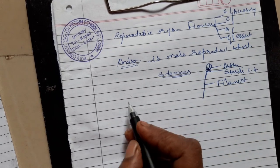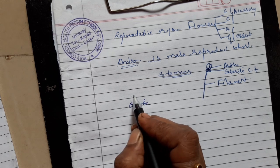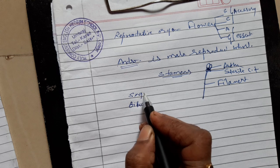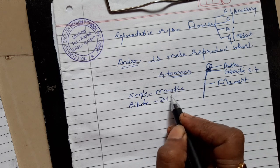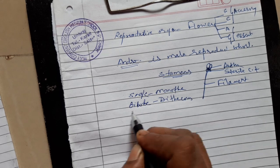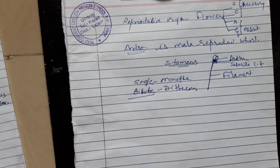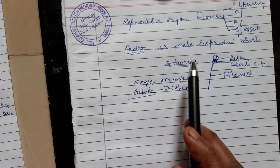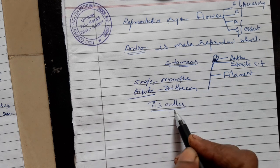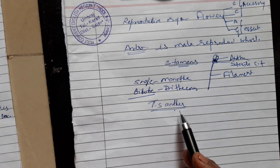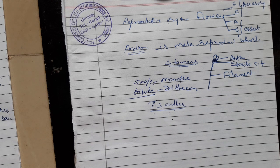The anther is either bilobed or single-lobed. A single lobe is called monothecous, and bilobed is called dithecous. This was explained in the last lecture. Today we will study the TS of anther, because the anther is the place where pollen grains are prepared. Let us see which are the parts of the TS of anther.